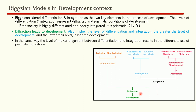Diffraction depends on two things: differentiation and integration. The more differentiated and integrated a society is, the more diffracted it is. Now, what does differentiation depend upon? The level of differentiation in any country depends upon technological and non-technological factors. More development of technology gives a higher level of differentiation and therefore more development.